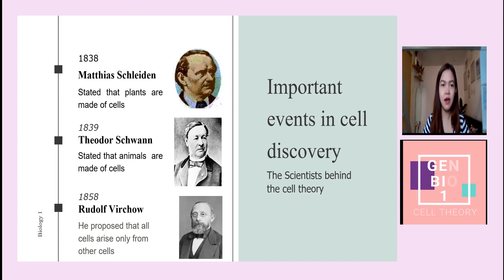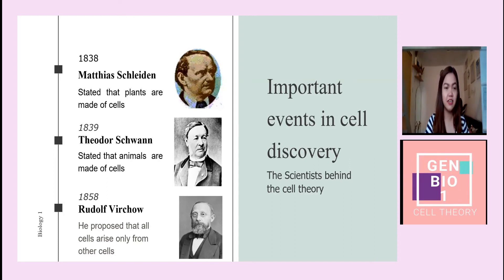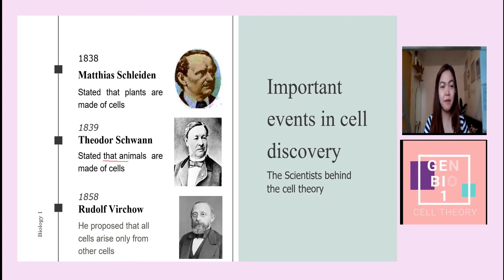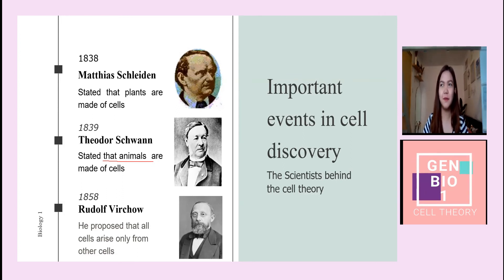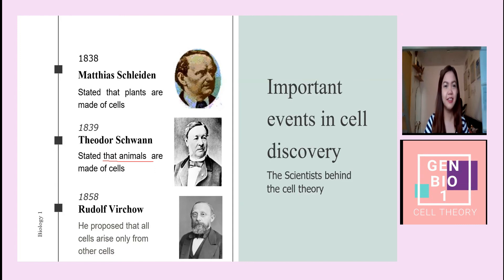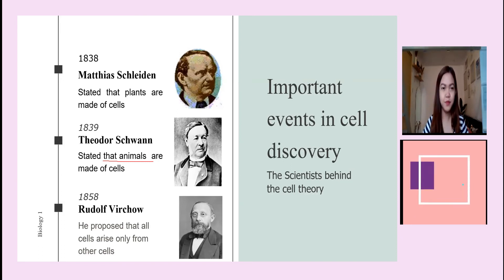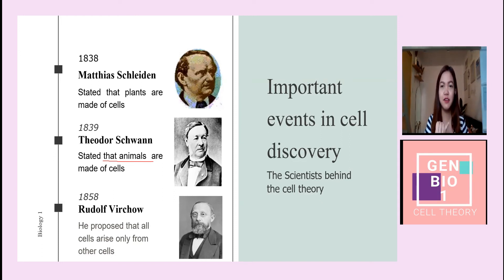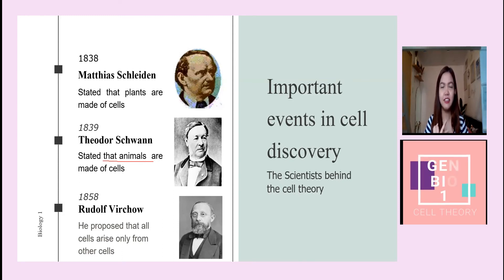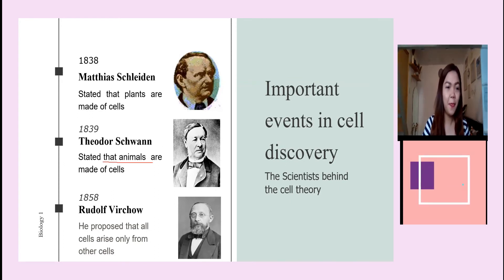Similarly, Theodore Schwann — yes, the same Schwann of Schwann cells — stated that animals are made up of cells. He examined animal tissue samples and concluded that animals are composed of cells. Together, their findings contributed to the first two postulates of cell theory: first, all living things are composed of cells; and second, the cell is the basic unit of structure and function of all living things.